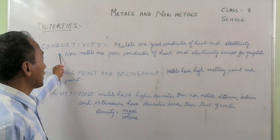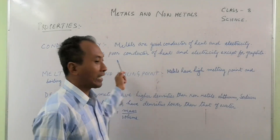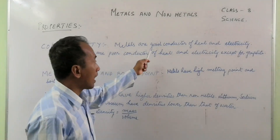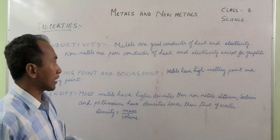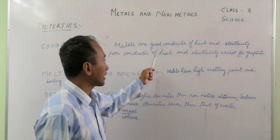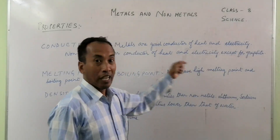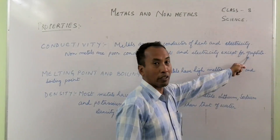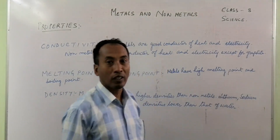Conductivity: metals are good conductors of heat and electricity, whereas non-metals are poor conductors of heat and electricity. Among the non-metals, except one non-metal called graphite, which is a good conductor of electricity.